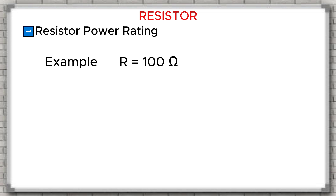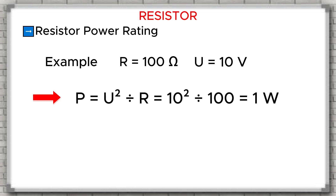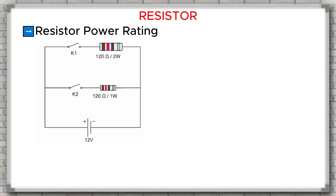Example: A resistor R equals 100 ohms, with a voltage U equals 10 volts. P equals U squared divided by R equals 10 squared divided by 100 equals 1 watt. This means the resistor must have a power rating of at least 1 watt to work safely. Next, I will give you a clear example of a resistor burning because it exceeds its power rating.